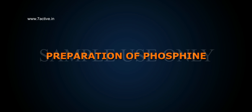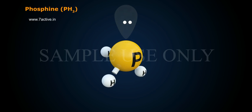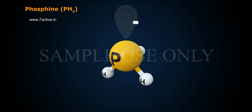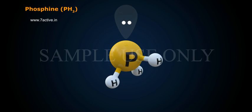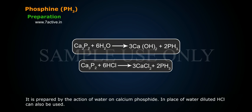Preparation of Phosphine (PH3). It was discovered by Gambra in 1783. It is prepared by the action of water on calcium phosphide; in place of water, diluted HCl can also be used.